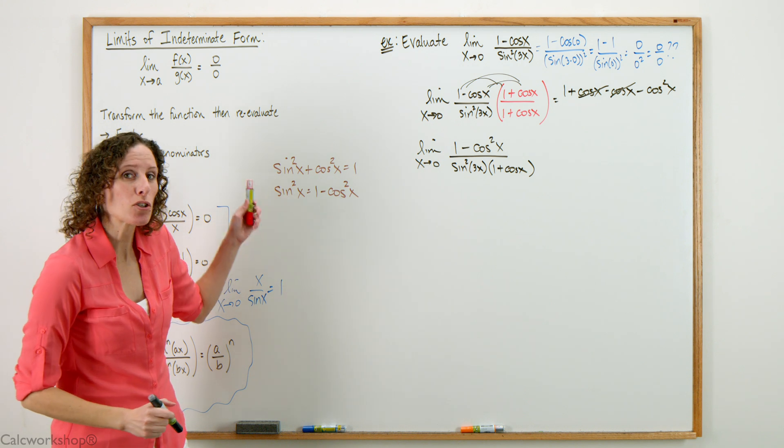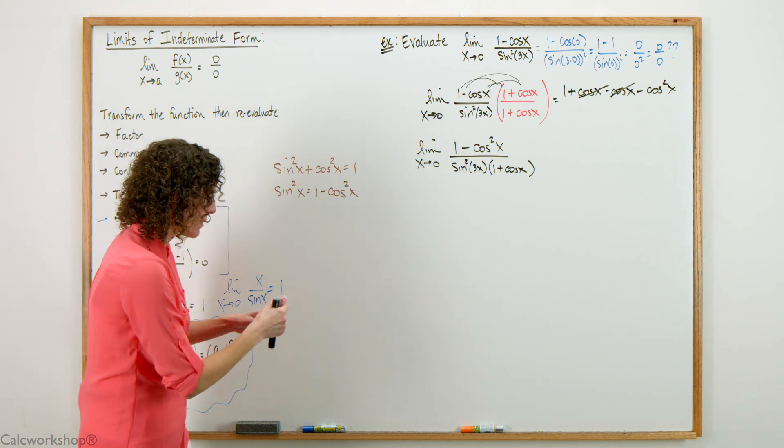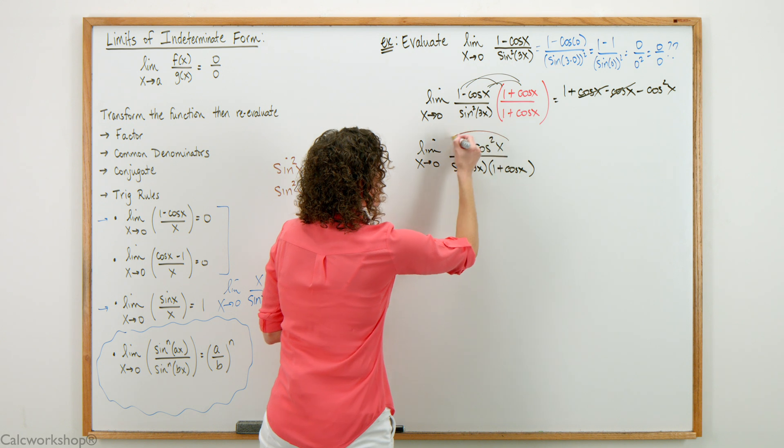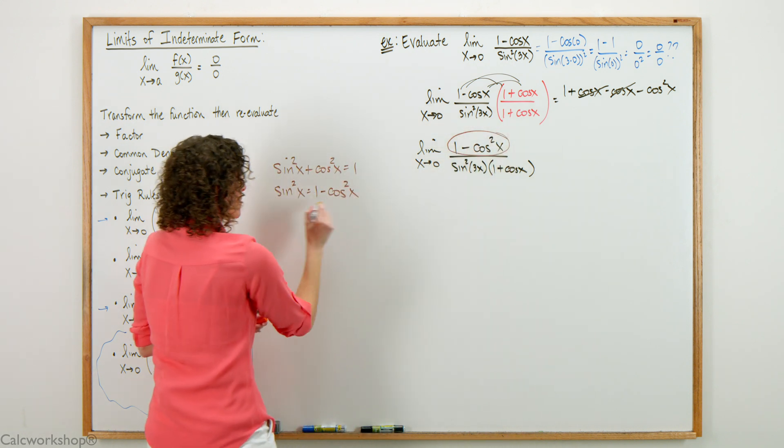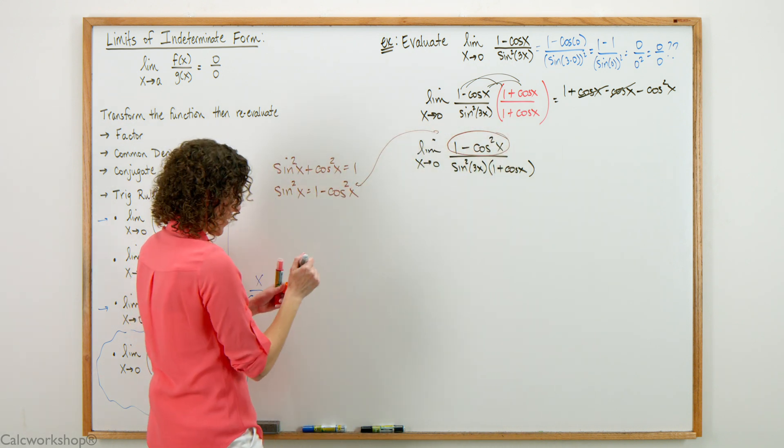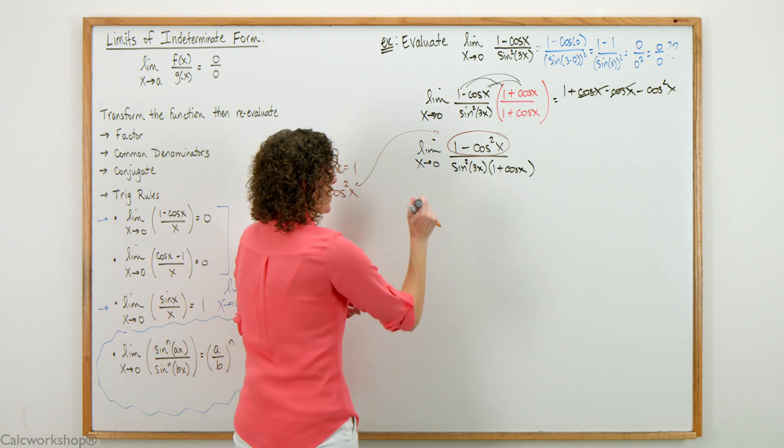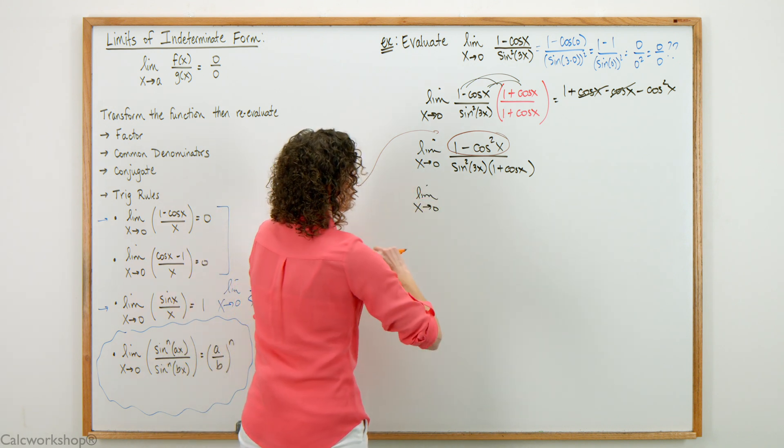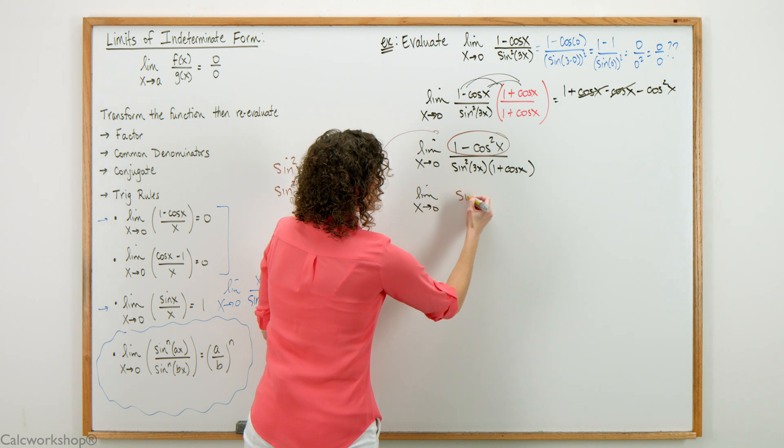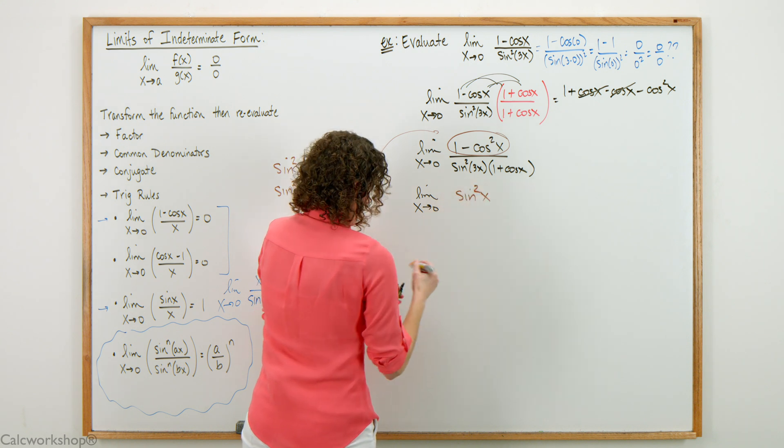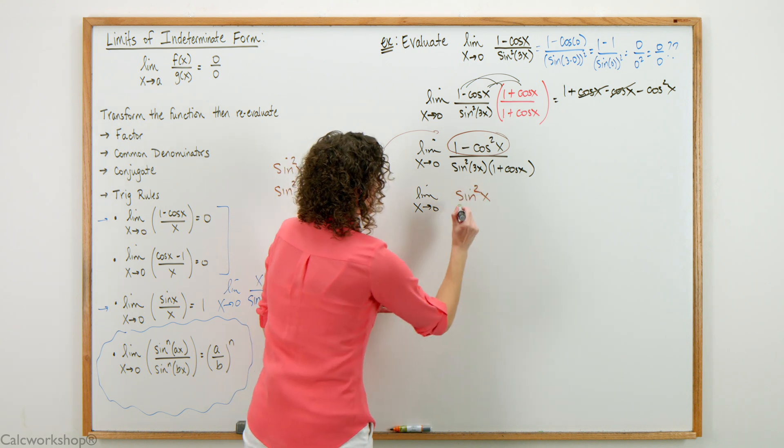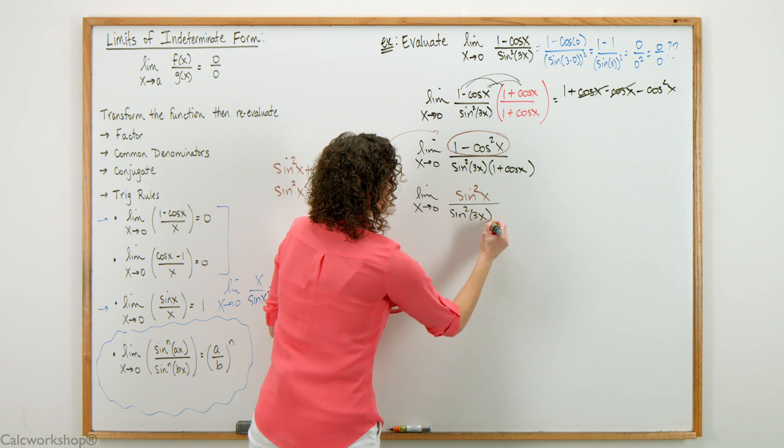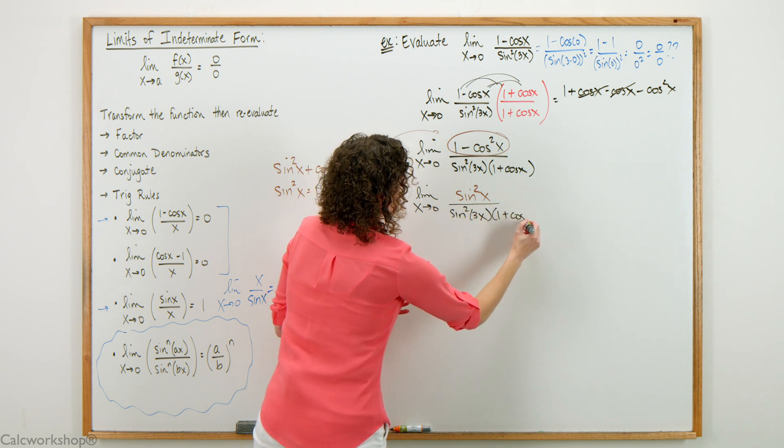Once we've used the conjugate, now we can use our trig relationship to manipulate the top. Notice I can now replace 1 minus cosine squared x with what it equals, which is sine squared x. Let's go ahead and change that.